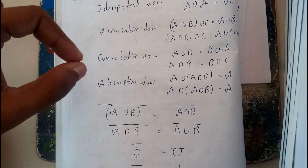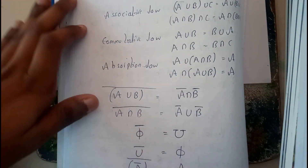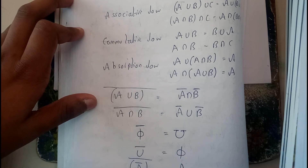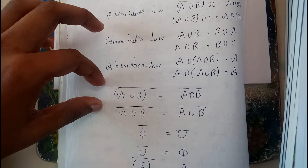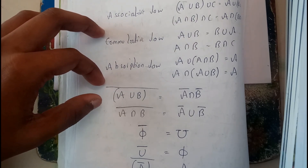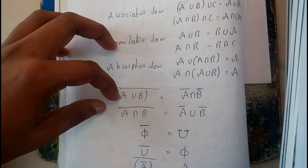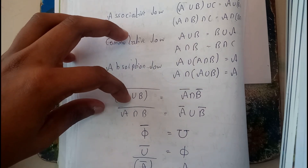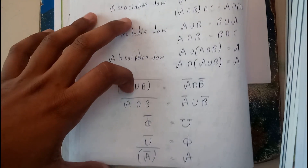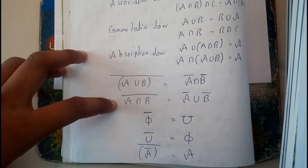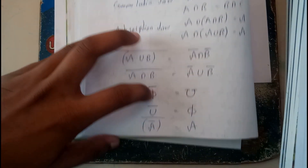If you want, you can verify these and recheck them. De Morgan's law: (A union B) bar equals A bar intersection B bar. This is similar to what you have learned in statements. If it is A, you use A bar; if it is B, you use B bar; if it is union, you make it intersection; if it is intersection, you make it union. So (A intersection B) bar equals A bar union B bar.